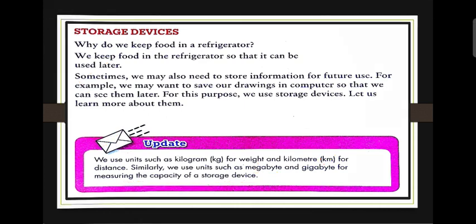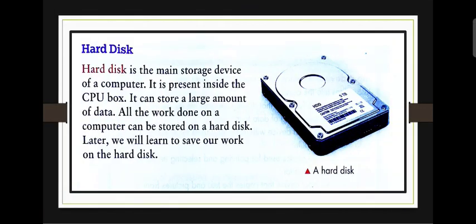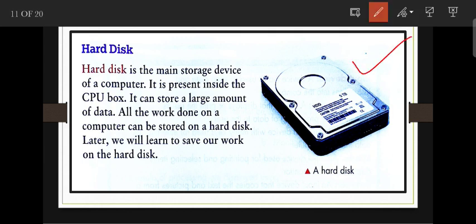The first storage device is the hard disk. It is placed inside the computer CPU box. The hard disk is the main storage device of a computer and can store a large amount of data. All the work done on a computer — such as pictures in MS Paint or Word documents — is saved on the hard disk.